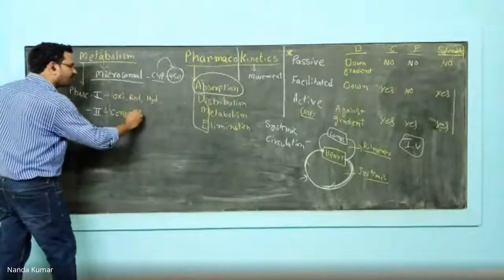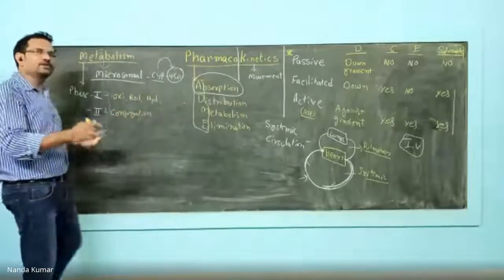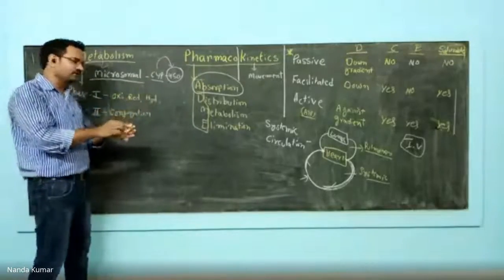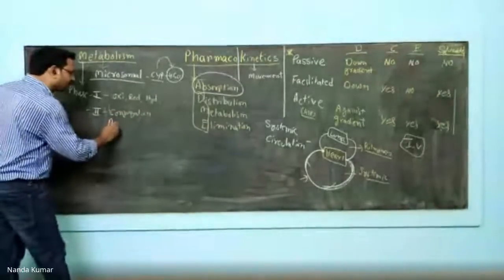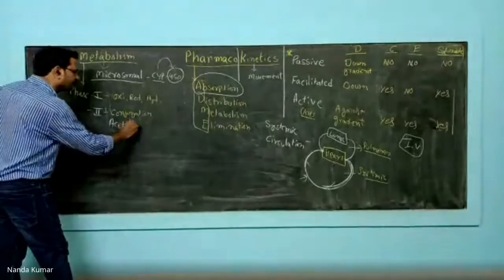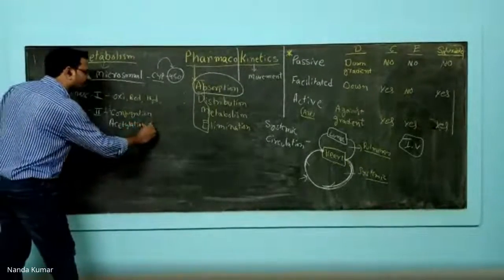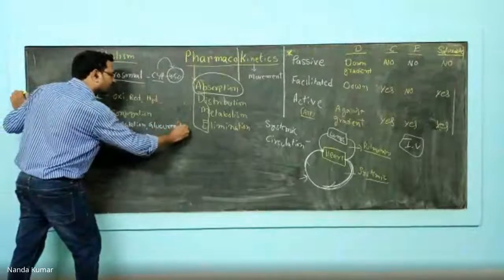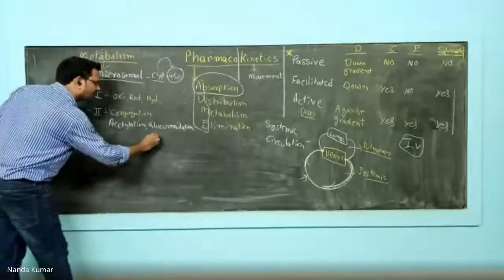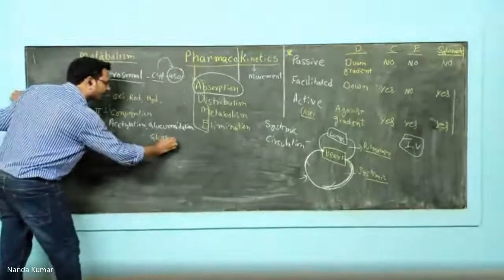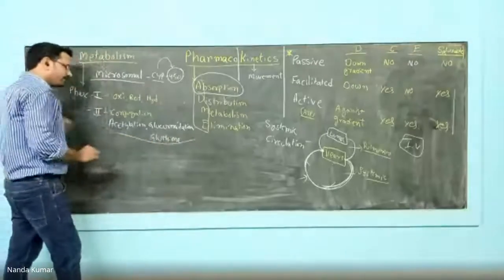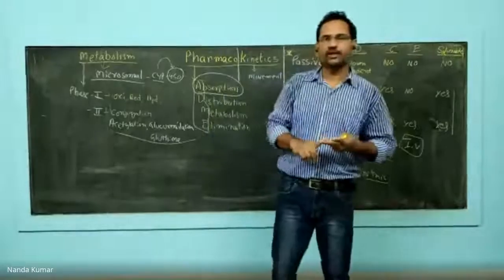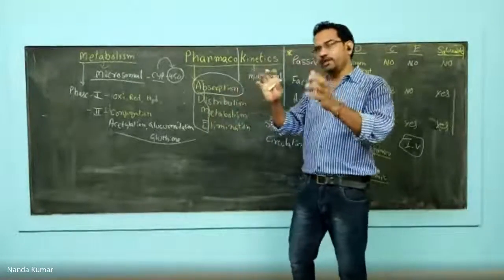Phase two is a kind of conjugation. Conjugation means the drug molecule is combined with another molecule. The types of phase two reactions include acetylation, glucuronidation, and glutathione attachment.